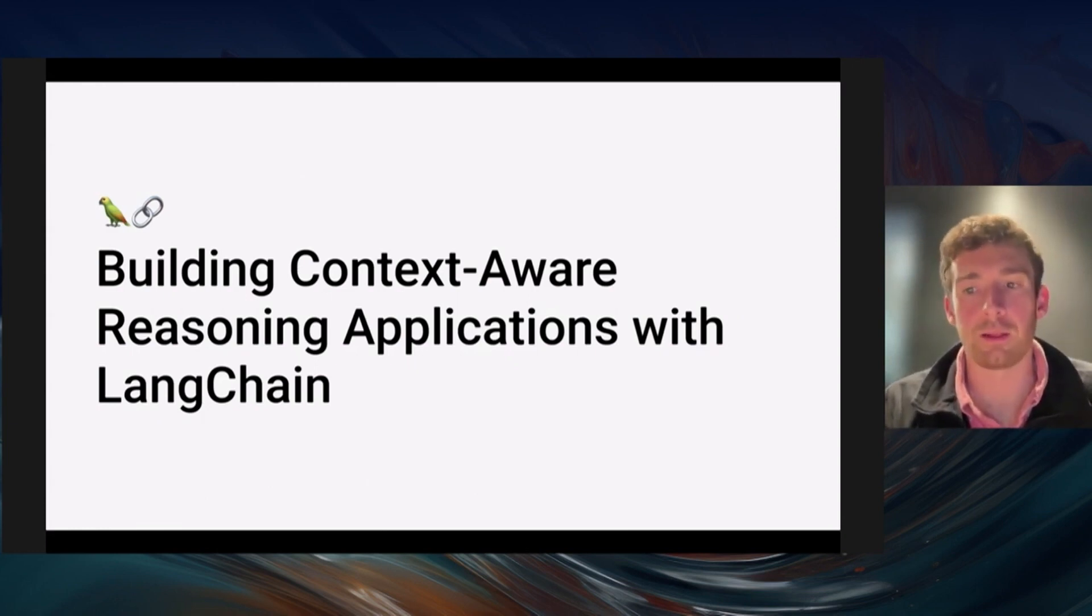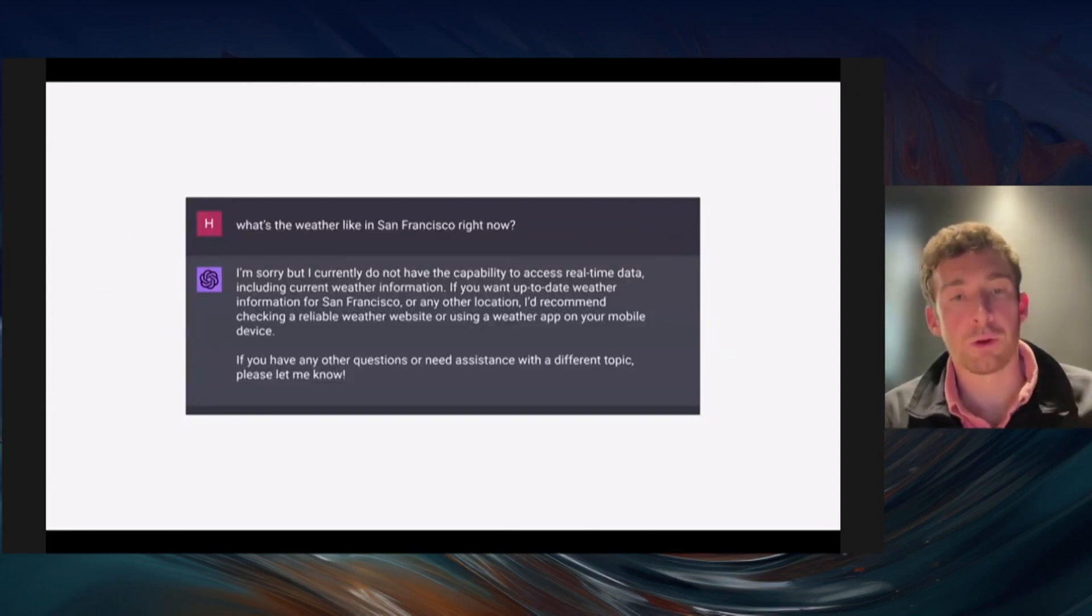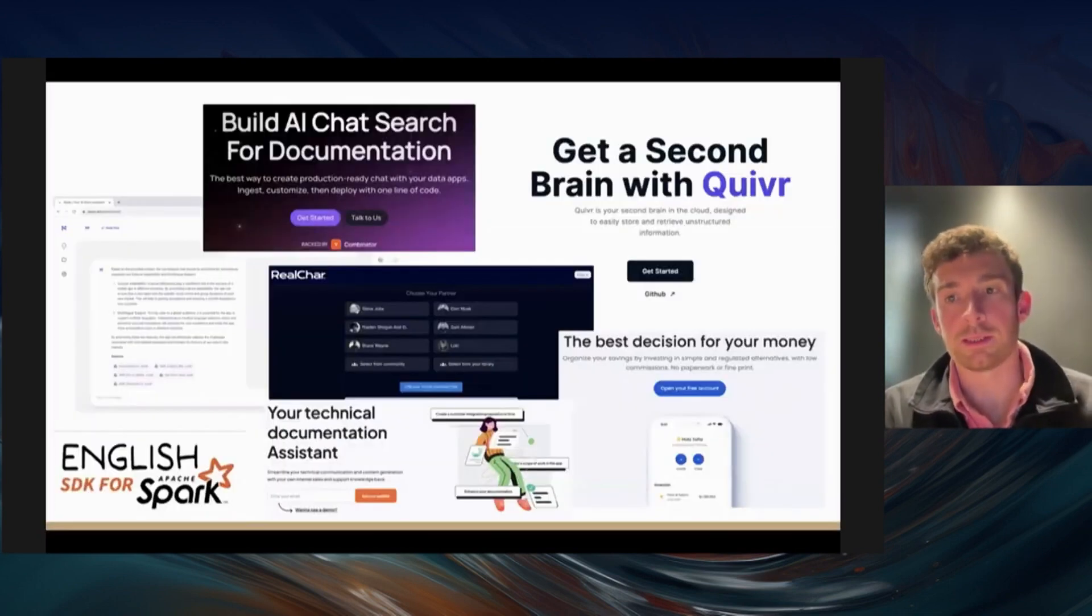To motivate it a bit, chat is great, but it is limited by the context that it has. You can ask it questions about the data that's been trained on and it's fantastic at answering those, but you ask it questions about recent information, private data, anything like that, and it doesn't know that. That's a lot of what LangChain was built to solve. Here is an example of a bunch of applications built on top of LangChain.